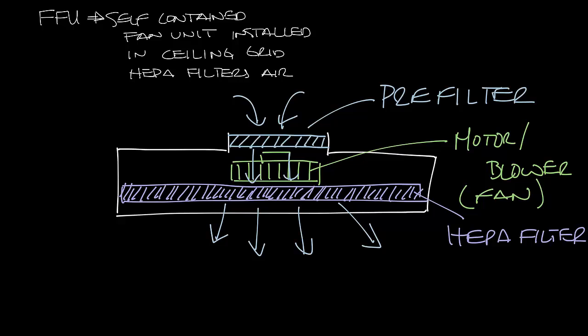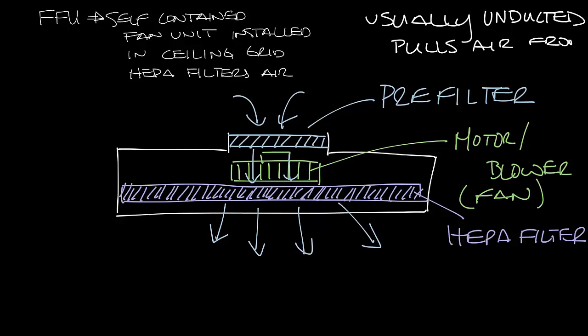You can get an inlet that you can duct to on a fan filter unit but often they are unducted and they just pull air from the ceiling plenum. So an air handler would put conditioned air into the ceiling plenum and then the fan filter unit would pull it out and filter it before it goes to the space.